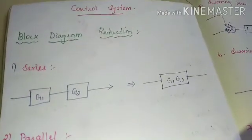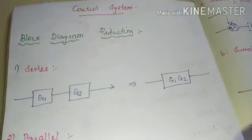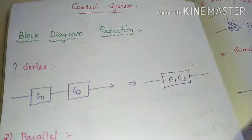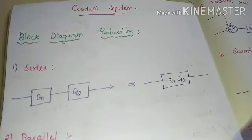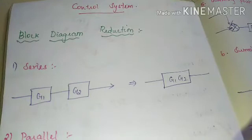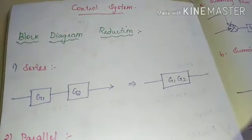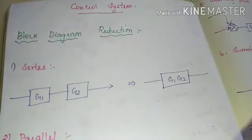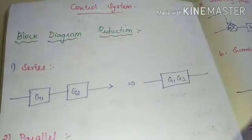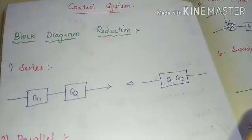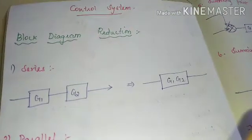This is Varsha's Education Academy. In this session, we are going to see the subject of control system. In control system, I have already covered all the topics related to TRB syllabus as well as all government competitive examinations. We have completed all the topics except block diagram reduction as well as Mason gain formula — that is, signal flow graph reduction.